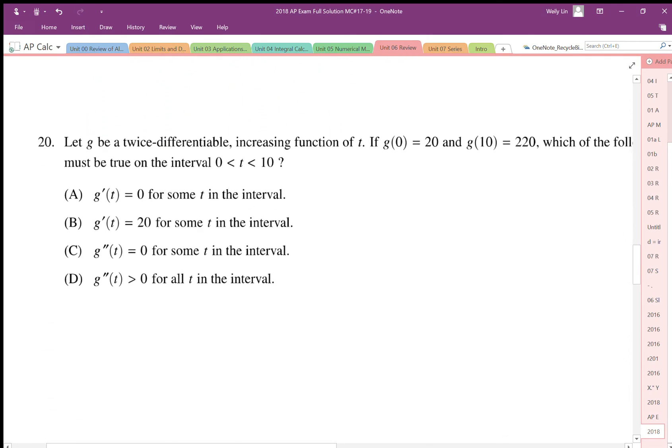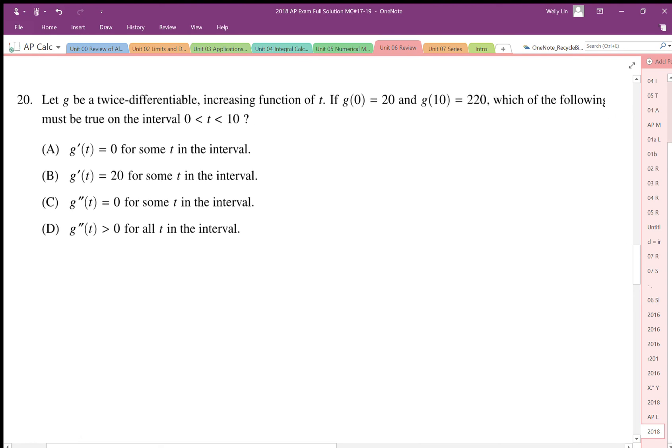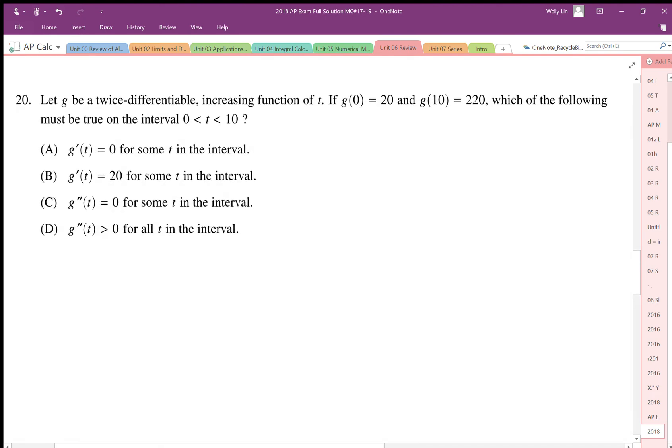Number 20, this problem is asking about a twice differentiable increasing function. It tells us g of zero is 20 and g of 10 is 220, and which of the following is true in the interval. First thing is I'm just going to sketch this graph: there's 20 at zero, at 10 it's up way up here at 220. It's good to get a sense of what this graph looks like.